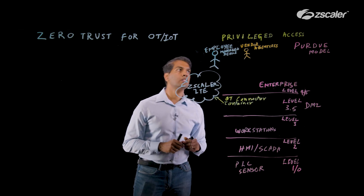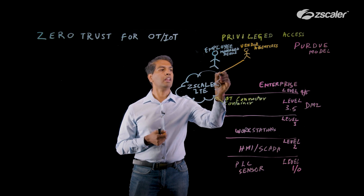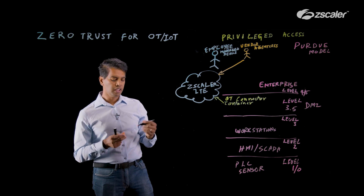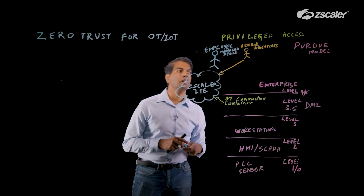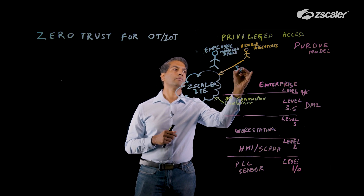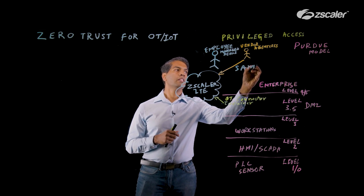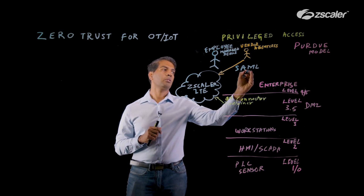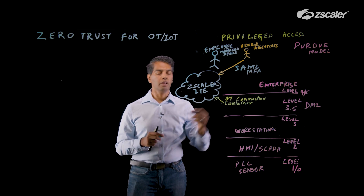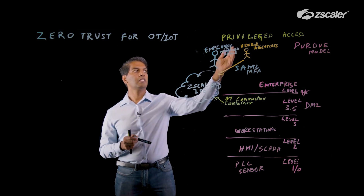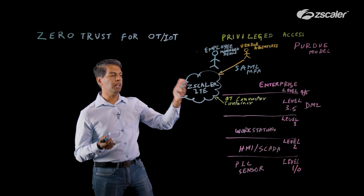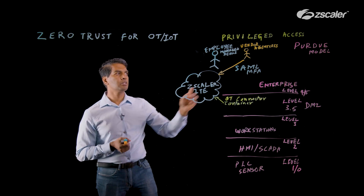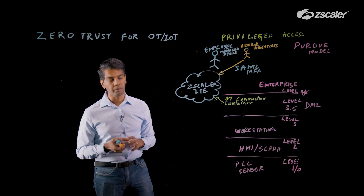For the vendor, they are also coming inbound into the Zscaler cloud. For both vendors and employees, the identity platform you choose is a SAML-based provider — a modern authentication system supporting SAML and MFA, all the capabilities in today's identity world. From a vendor perspective, it's always agentless, meaning they can come without deploying any clients or agents on their devices. It's an unmanaged device, whereas the employee can come from a managed device.